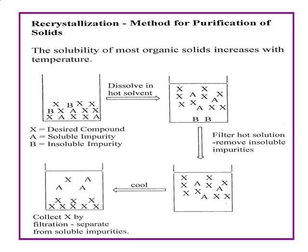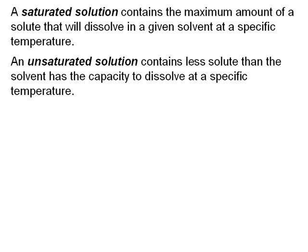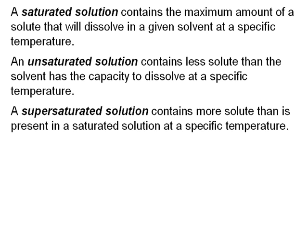To understand why a slow and careful crystallization is preferable to a rapid precipitation, let's consider the mechanism of crystallization. A saturated solution contains a maximum amount of solute that will dissolve in a given solvent at a specific temperature. An unsaturated solution contains less solute than the solvent has the capacity to dissolve, and a supersaturated solution contains more solute than is present in a saturated solution at a specific temperature.